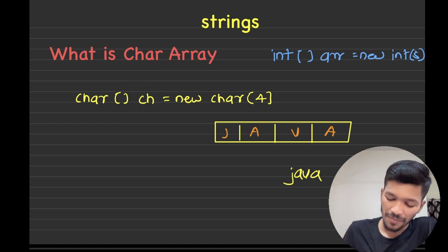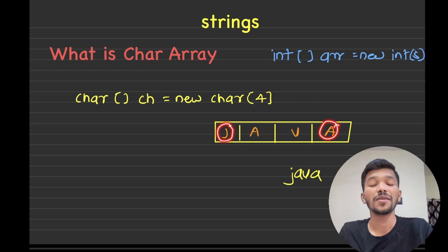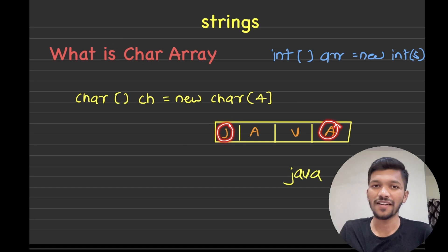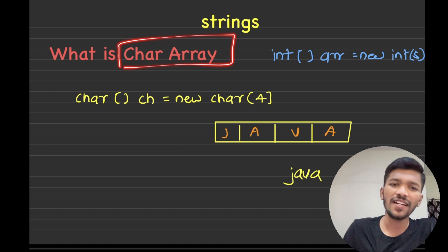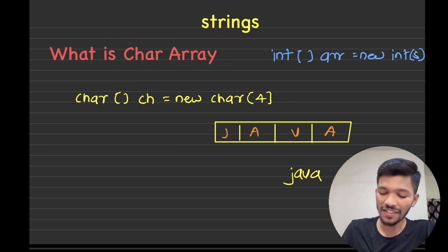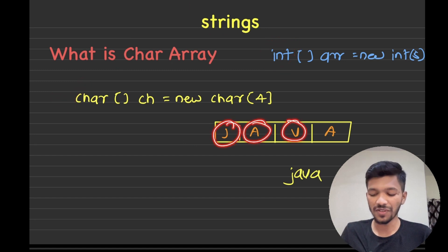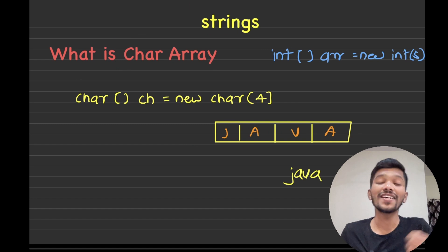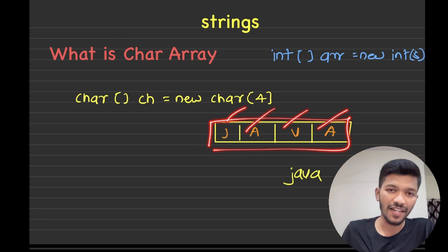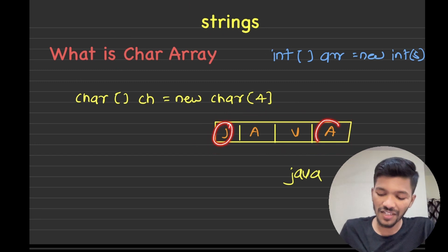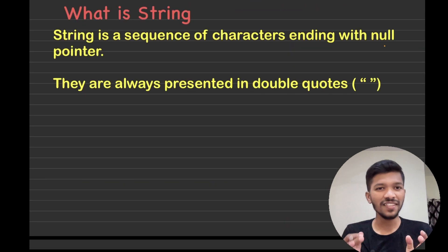The second important thing to note is that my character array is starting with a letter and it is also ending with a letter. Therefore, this is not called a string, because strings always end with a special character. Character arrays are simple arrays that can store characters, and while we can convert a character array to a string, they are not actually strings. The first reason is we need to traverse the whole array to print it, and the second is it ends with a letter rather than the special character that strings require.